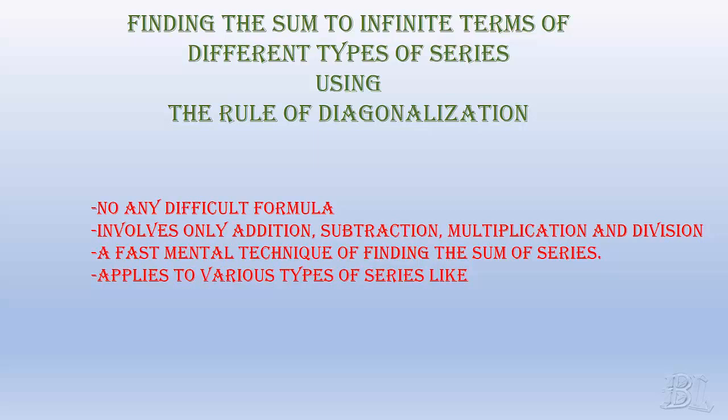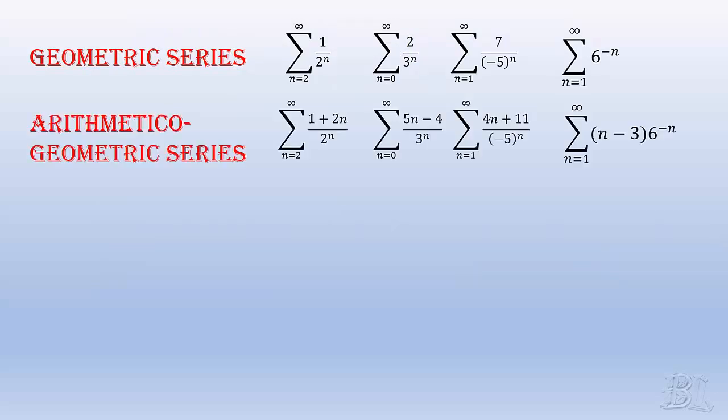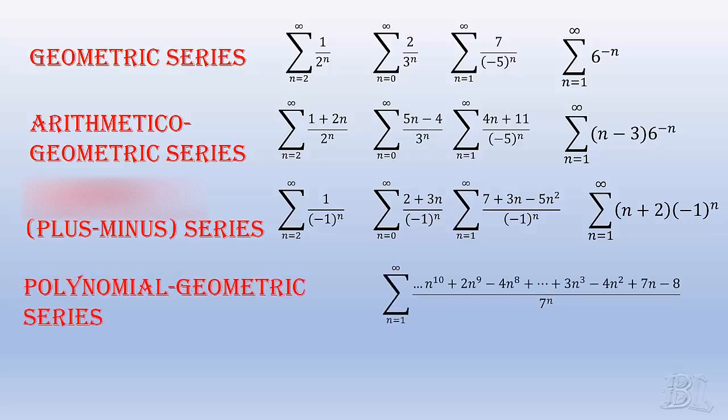Besides, it is also used for various types of series like the geometric series shown in various examples, the arithmetic geometric series also shown in examples, the telescoping series or the plus and minus alternating series as shown, whose consecutive terms alternate in sign, and finally I call the polynomial geometric series as the numerator part consists of only the function of n with positive integral powers in n.